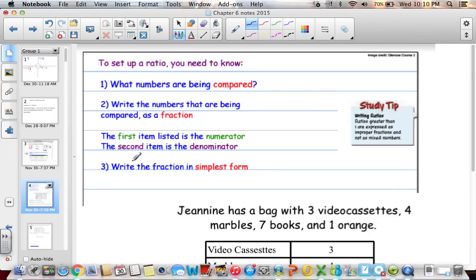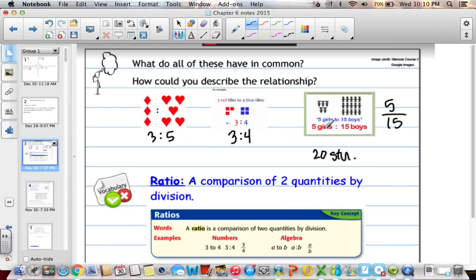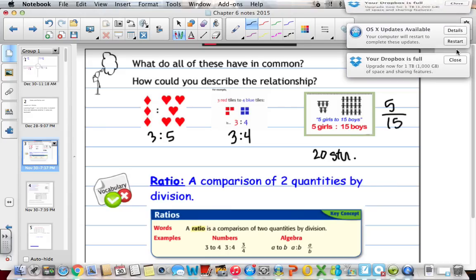You don't need to write this down, but when we set up a ratio, we need to ask ourselves a few questions. We need to know what are we comparing. So if we think of the girls and the boys, then the two numbers that I'm comparing are 5 and 15, or number of girls versus number of boys. We write the numbers that are being compared, usually as a fraction, and also we write it in simplest form. And then the first item is the numerator, and the second item is the denominator. So if we go back to our girls and boys, notice that I put 5 on the top, which is the numerator, and then 15 on the bottom, which is my denominator.